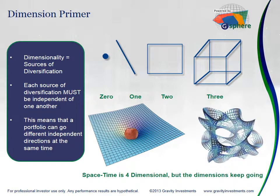A quick primer on dimensions: we think of dimensions typically spatially — one, two, three — line, square, or cube. Each additional dimension takes what was there before and extends it out at a 90-degree angle. That's true regardless of whether you have four dimensions or any number of dimensions. Mathematically, you're really adding a dimension every time you add an essentially equally weighted and uncorrelated asset.